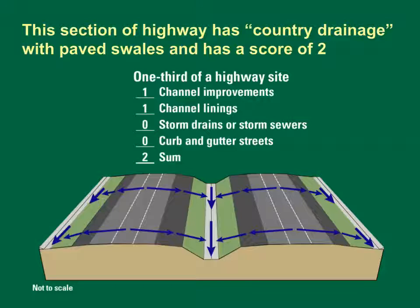This section of highway has country drainage with paved swales. These swales are identified as having channel improvements because they have been designed as straight, deep, wide stormwater conveyances clear of flow obstructions. The channel lining score is one because these concrete linings increase flow velocity. If these were riprap linings, however, these swales would not be scored as having improvements or linings. The other BDF factors are zero, giving this section a total score of two. Three such sections would produce a BDF of six.